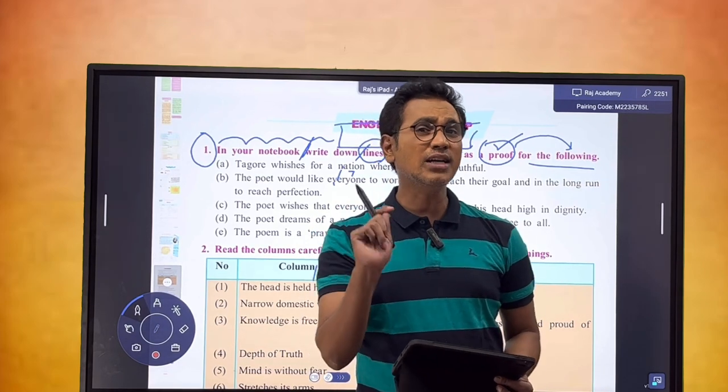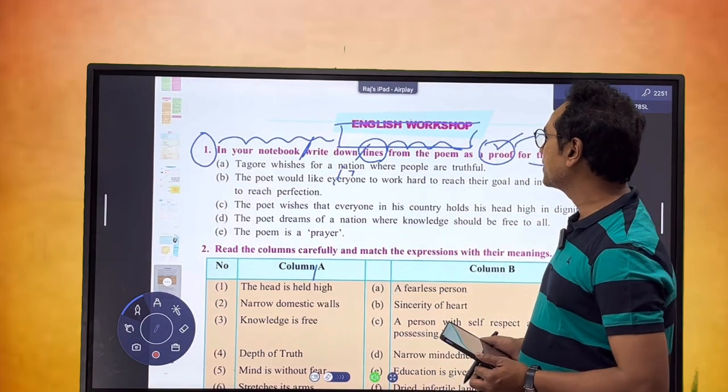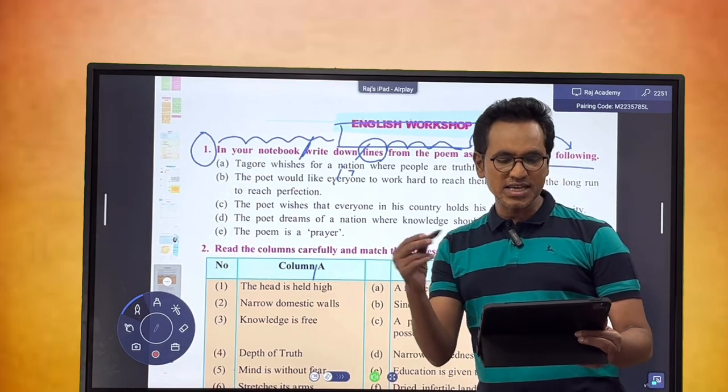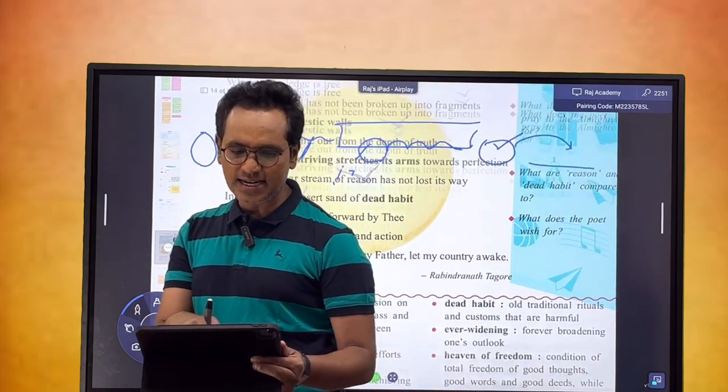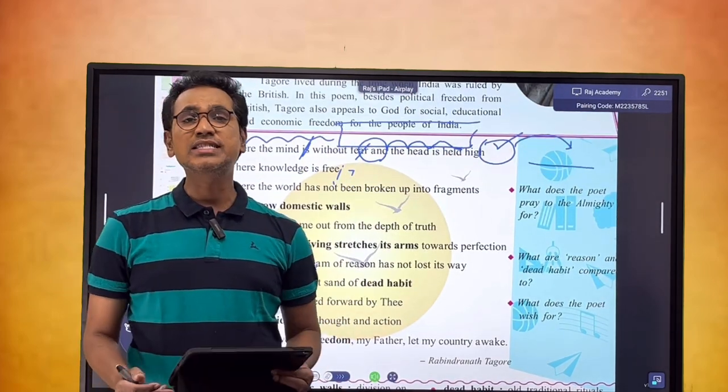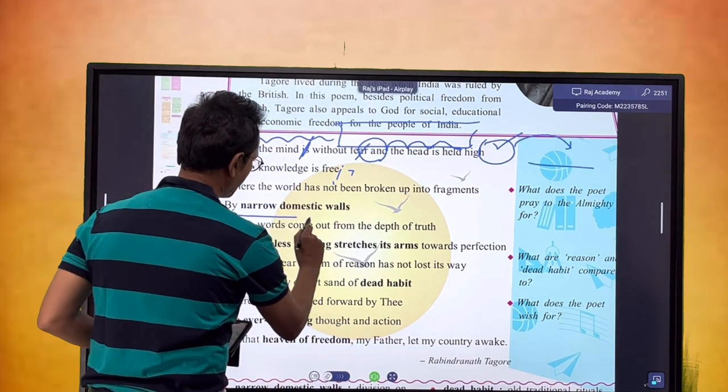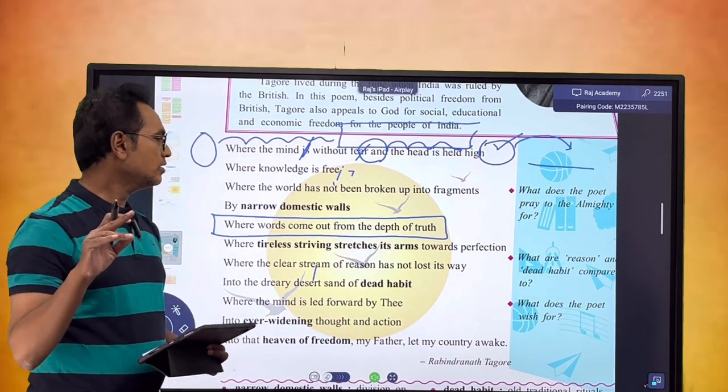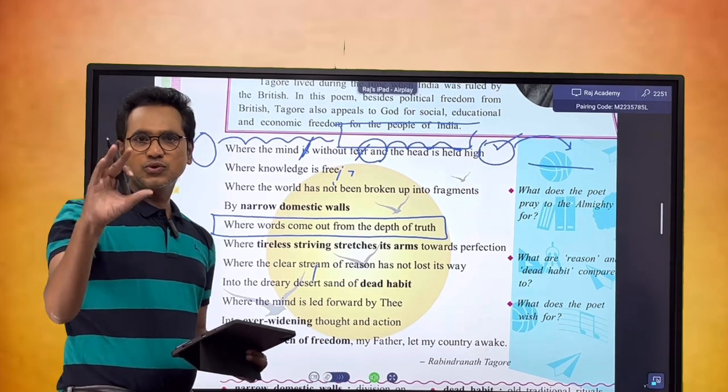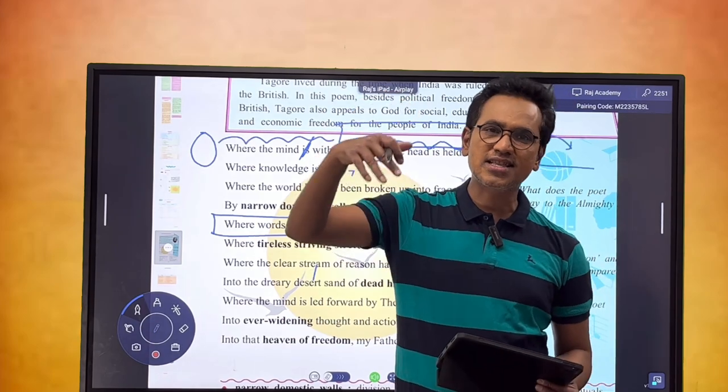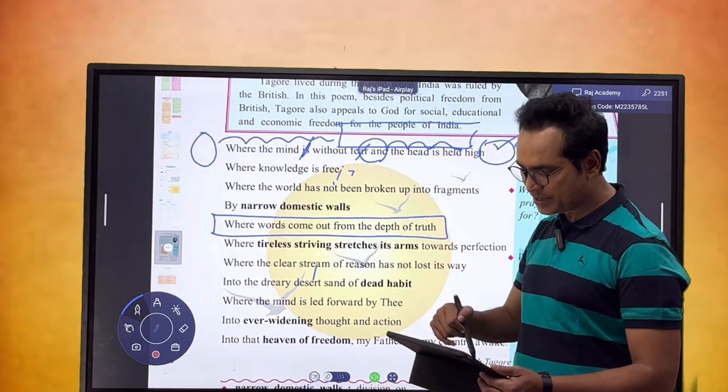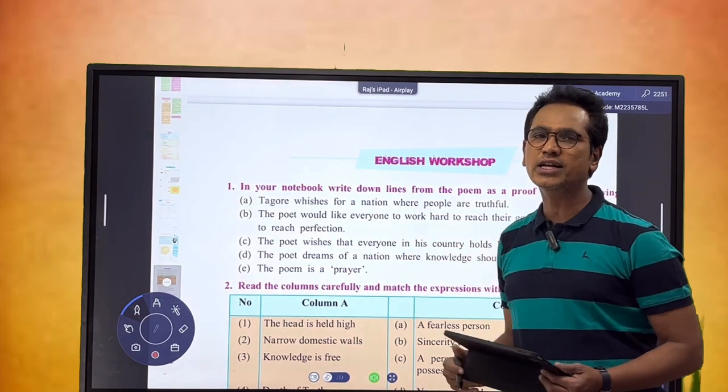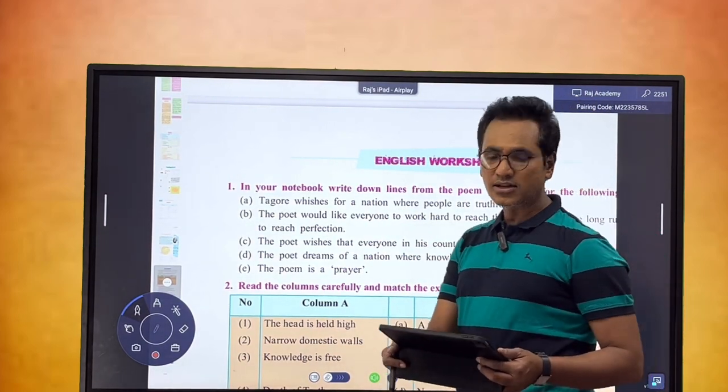The line is not taken as it is from the poem. We can find where words come out from the depth of truth. This line will be taken for Tagore wishes for a nation where people are truthful.